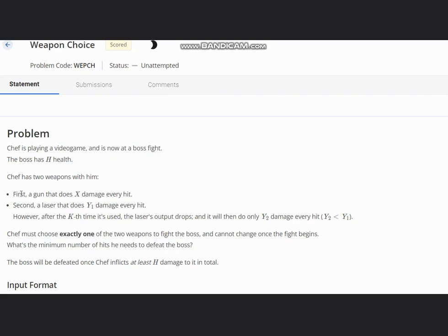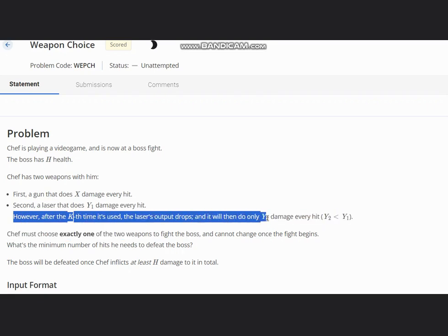Chef has two weapons with him. First, a gun that does X damage every hit. Second, a laser that does Y1 damage every hit. However, after K times it's used, the laser's output drops and it then only does Y2 damage every hit, and Y2 is less than Y1.